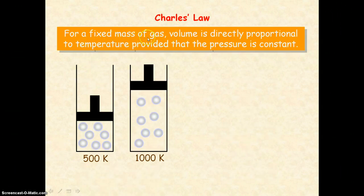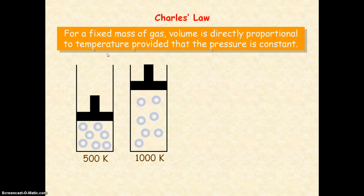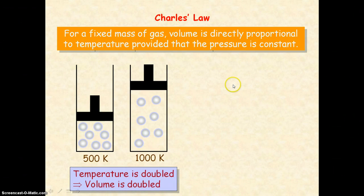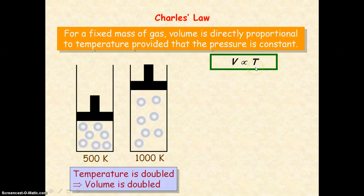Charles' law states that for a fixed mass of gas, the volume is directly proportional to the temperature, provided that the pressure is constant. Charles' law is looking at the relationship between volume and temperature of a gas. What that means is if the temperature of the gas is doubled, then the volume is also doubled. Mathematically, volume is proportional to the temperature.